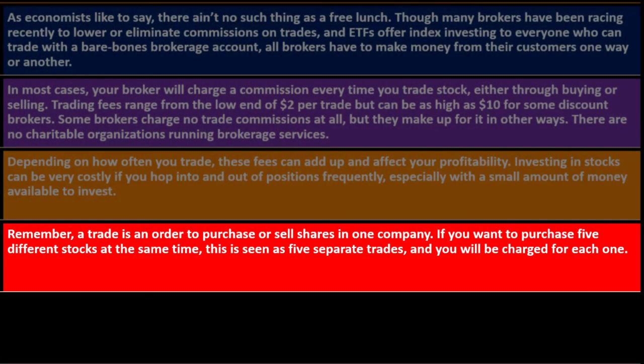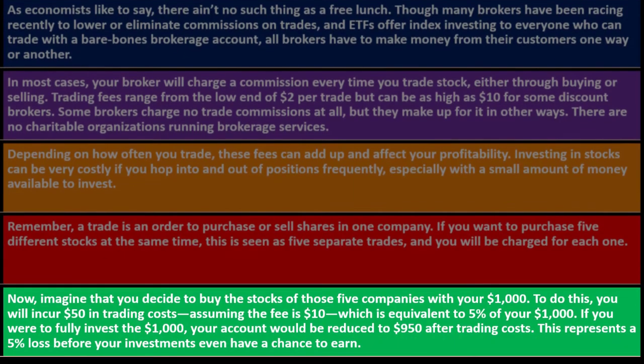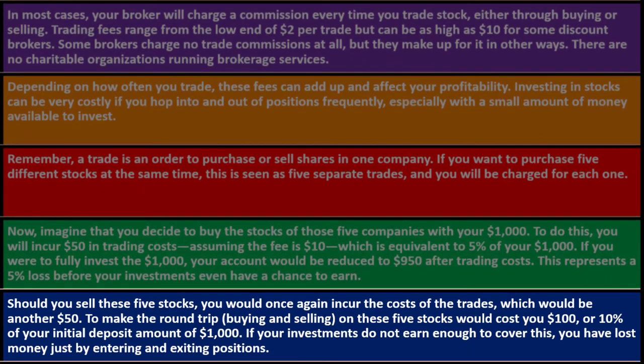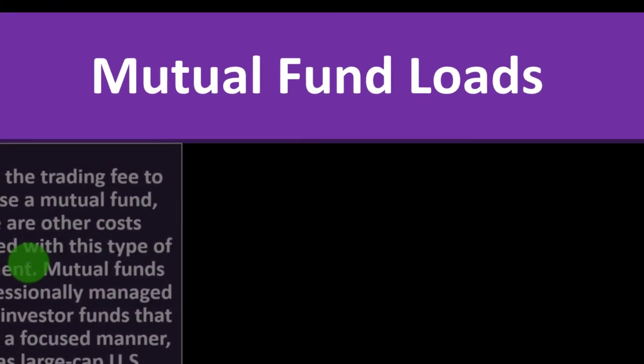Remember, a trade is an order to purchase or sell shares in one company. If you want to purchase five different stocks at the same time, that's five separate trades and you'll be charged for each one. For example, with one thousand dollars and a ten dollar fee per trade, buying five stocks costs fifty dollars — five percent of your capital — leaving you with only $950 invested. Selling those five stocks would cost another fifty dollars, meaning a round trip costs one hundred dollars, or ten percent of your initial deposit.